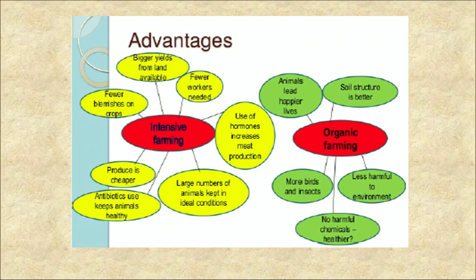Now come to the advantages of intensive farming versus organic farming. Advantages of intensive farming are: bigger yields from available land, fewer workers needed, use of hormones increases meat production, large numbers of animals kept in ideal conditions, produce is cheaper, and fewer blemishes on crops. Advantages of organic farming are: better soil structure, less harmful to environment, no harmful chemicals, and healthier conditions for more birds, insects and animals.